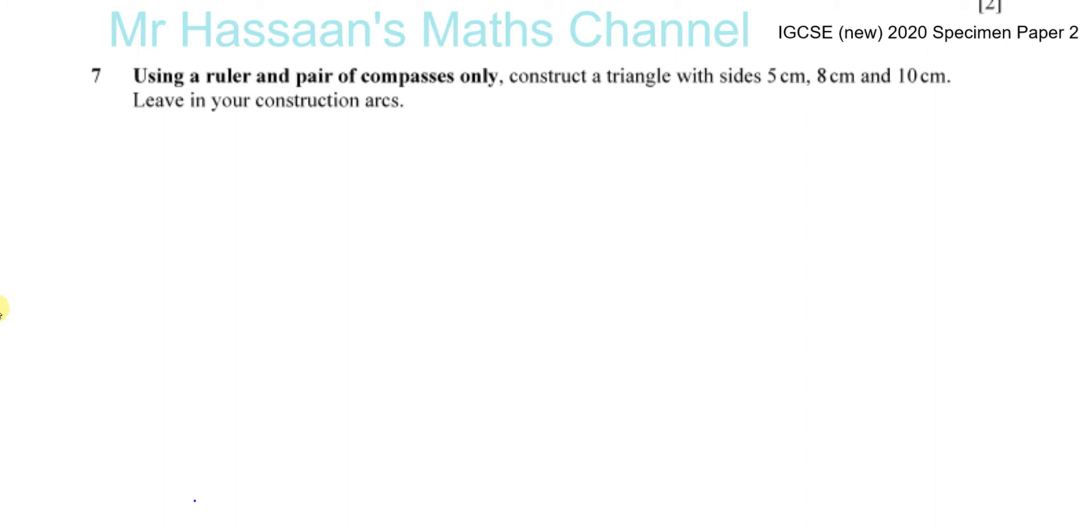They've told us to use a ruler and pair of compasses only to construct a triangle with sides 5, 8 and 10 centimeters, leaving your construction arcs.